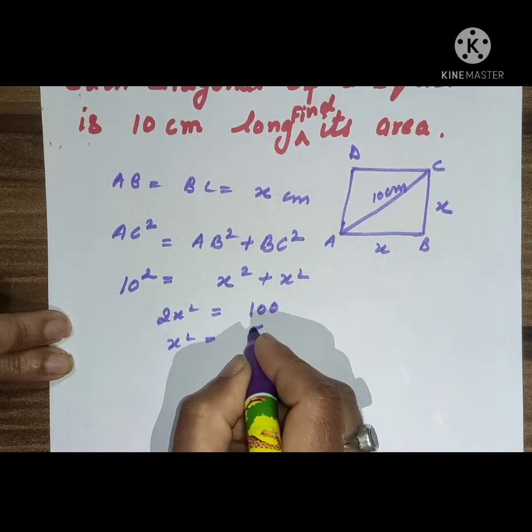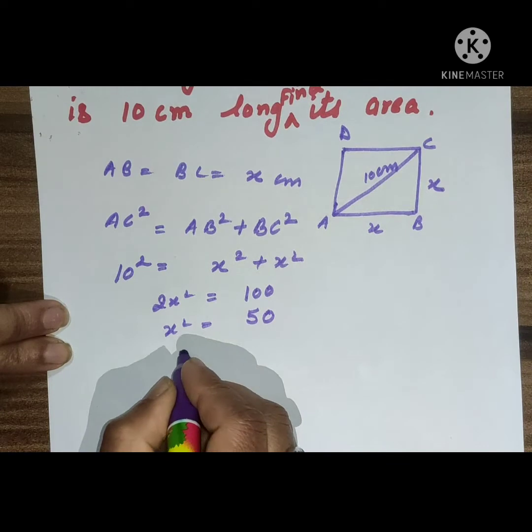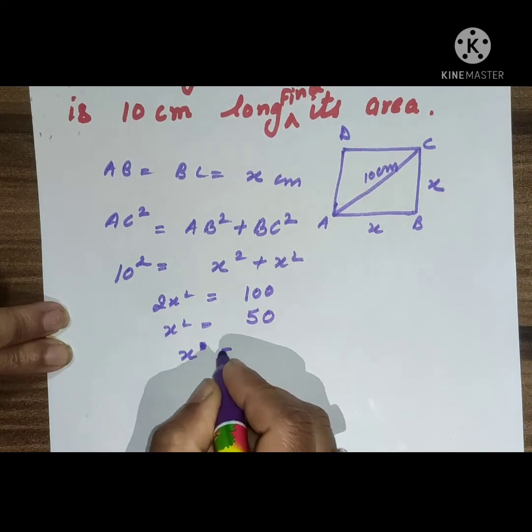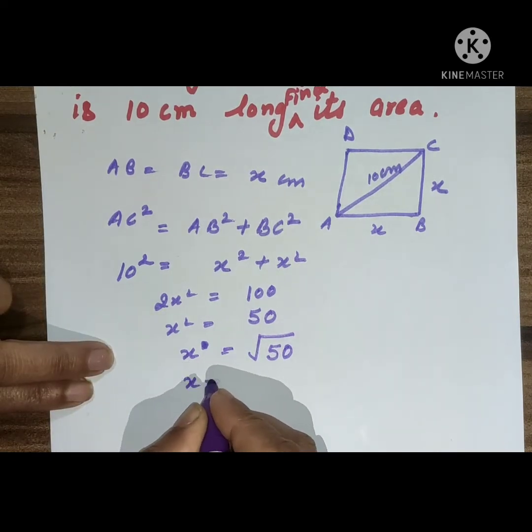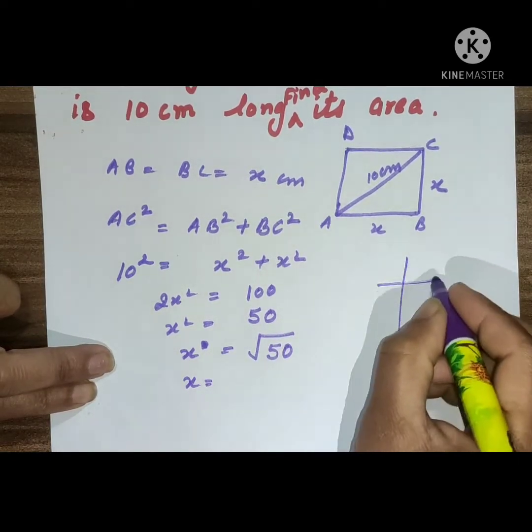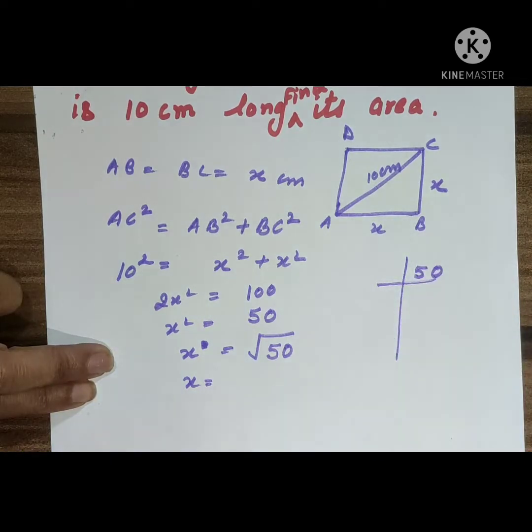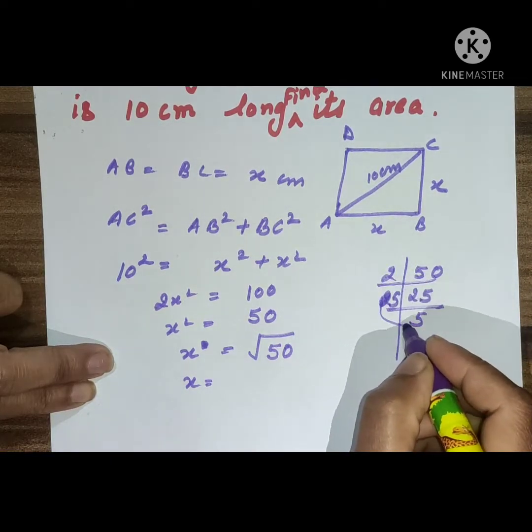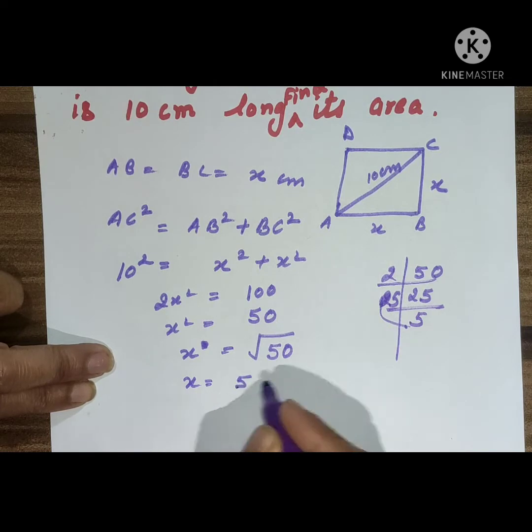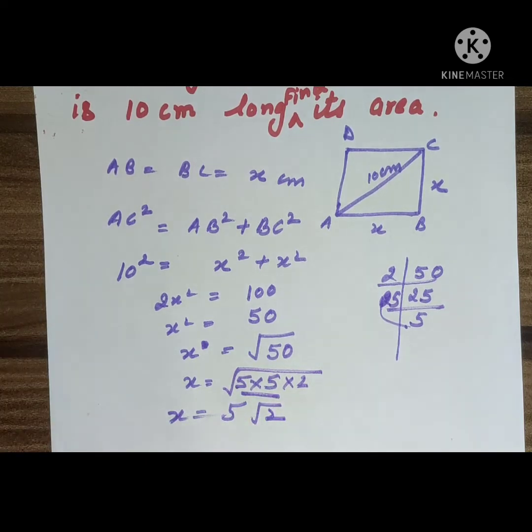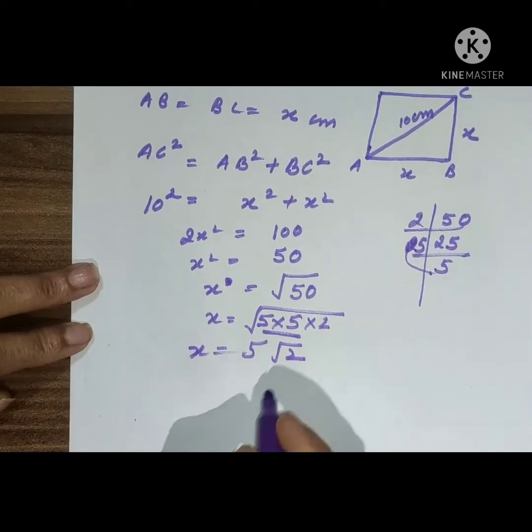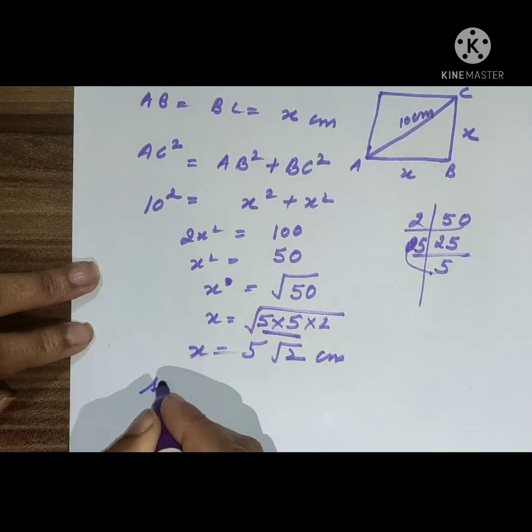And when we take the square root, x equals root 50. So how do we find the root of 50? We factor it: 50 is 25 times 2. So x is equal to 5 root 2.